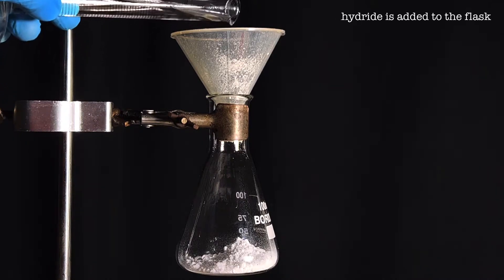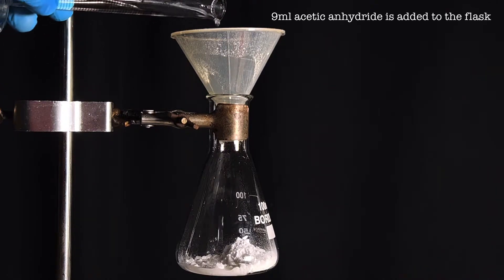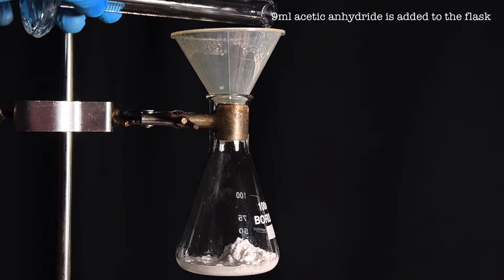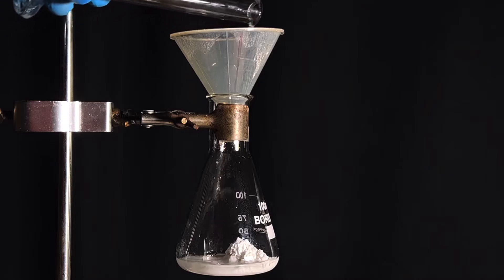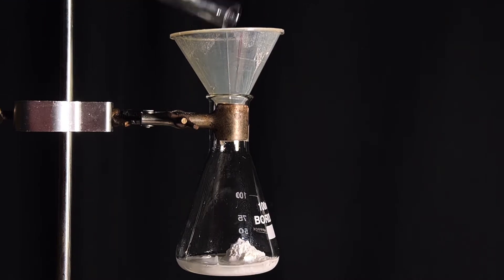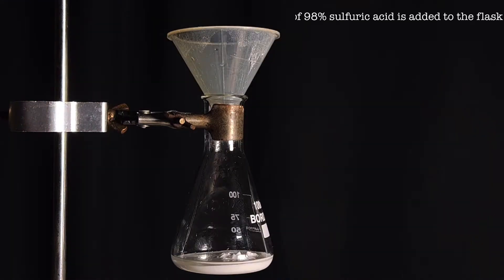Next, 9 milliliters of acetic anhydride was added to the flask. The acetic anhydride was added in such a way that it washed down all the salicylic acid residue that was present on the powder funnel. Next, 5 drops of 98% sulfuric acid was added to the reaction mixture.